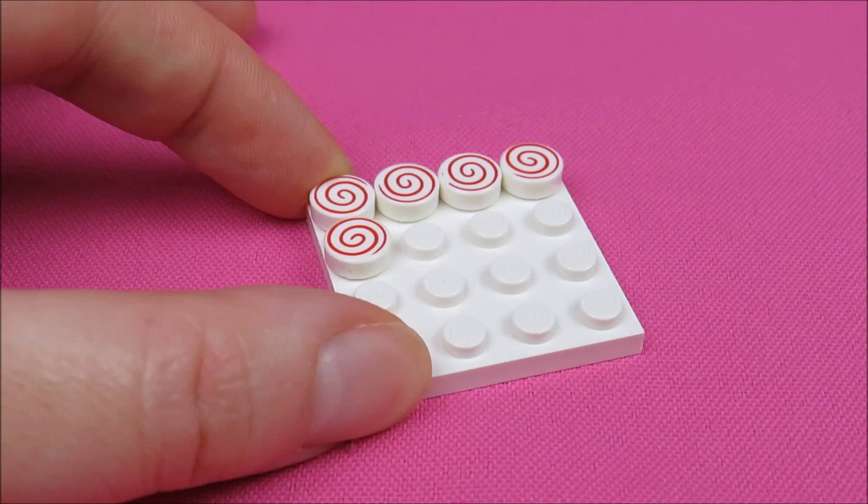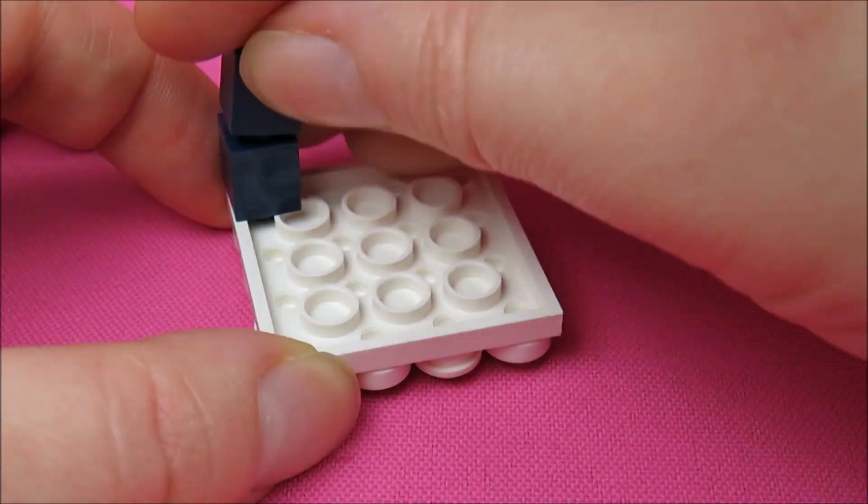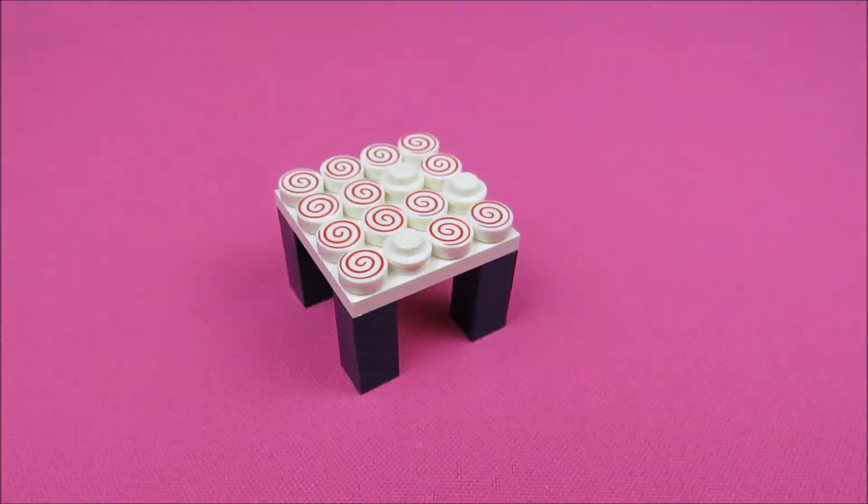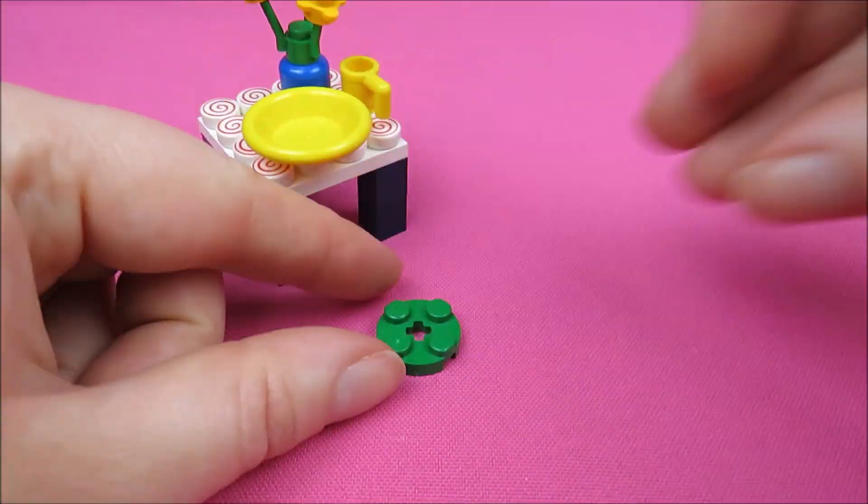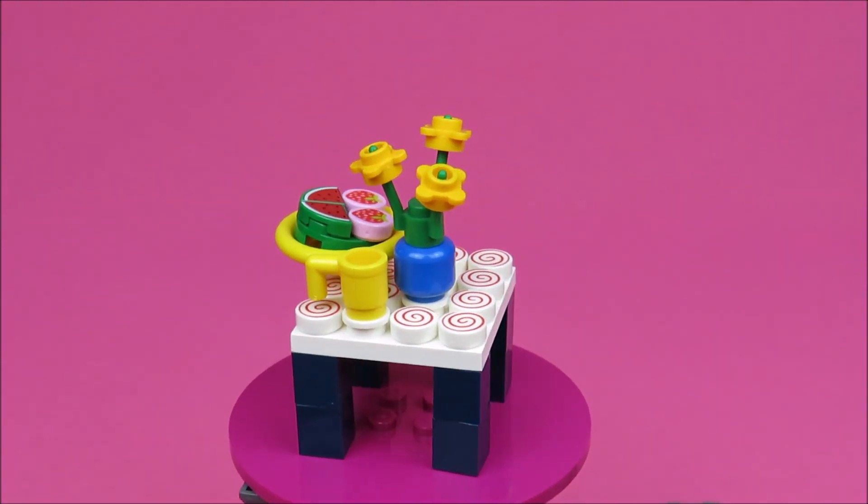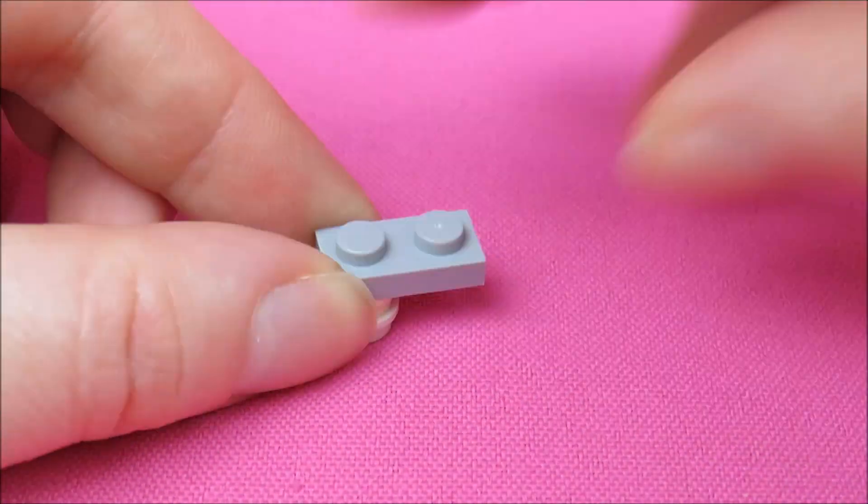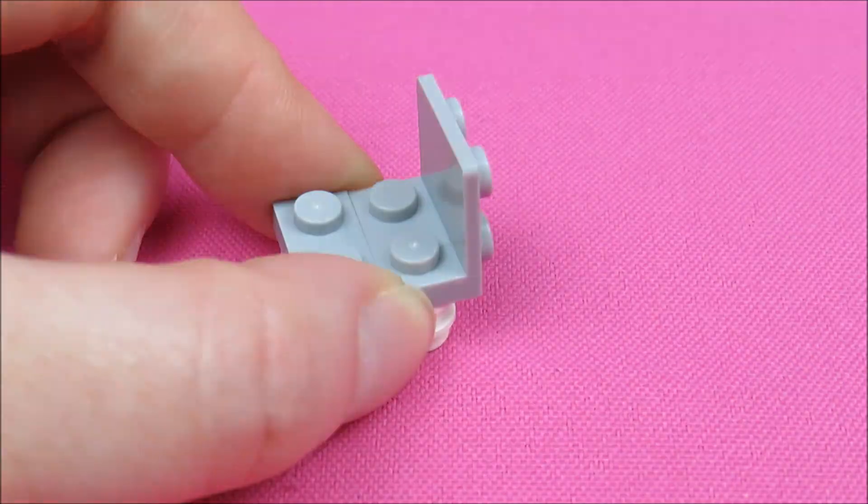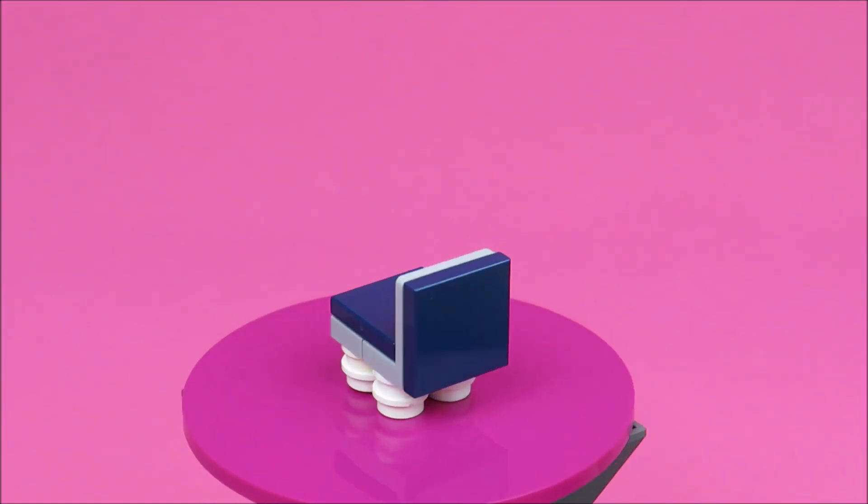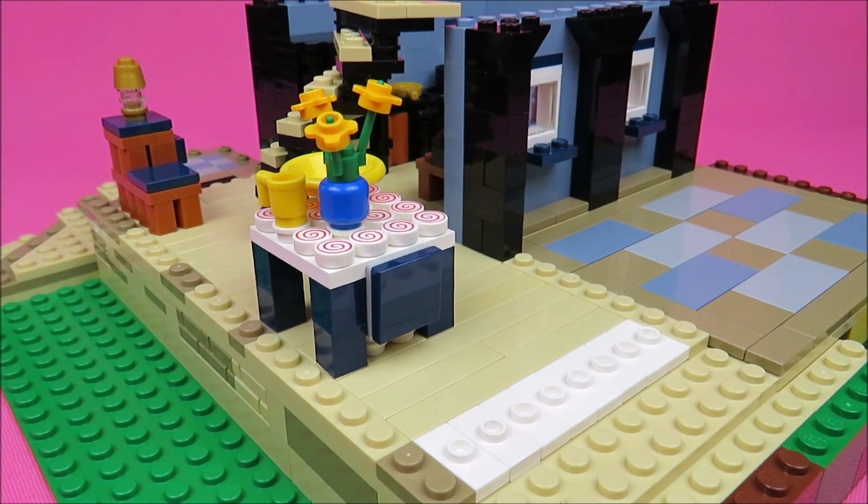And here's the dining table with a lollipop-like tablecloth. And some flowers. And of course some fruit. And here are the chairs, or at least one chair of three. And here's going to be the dining area.